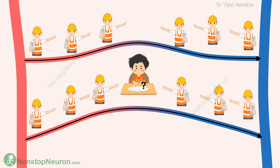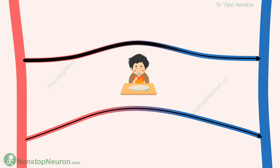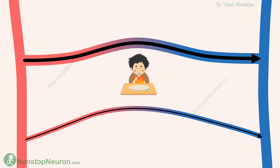The blood starts to flow from these capillaries, which ultimately brings more nutrients to the tissue. If the flow through such capillaries keeps increasing, the smooth muscles also invade the wall, and such capillaries grow into larger vessels like arterioles or venules. Thus, a long-term increase in demand of nutrients causes the formation of new blood vessels. This was angiogenesis.